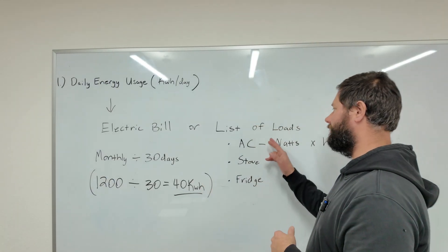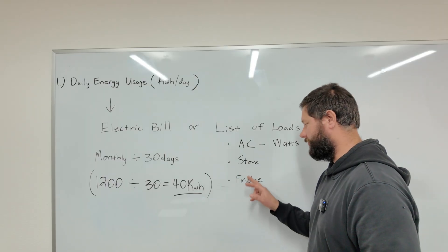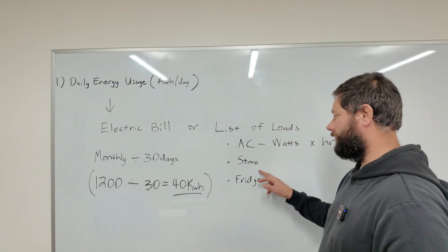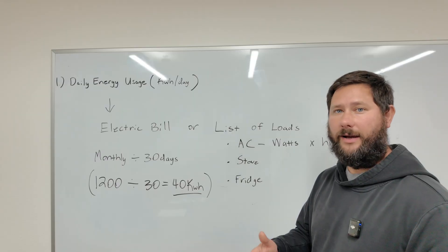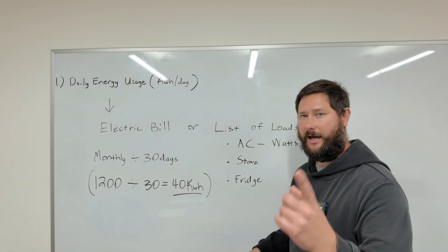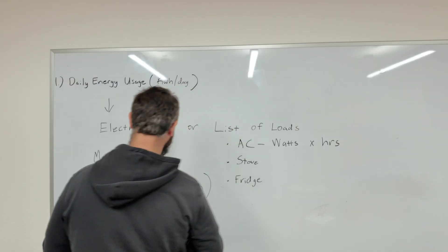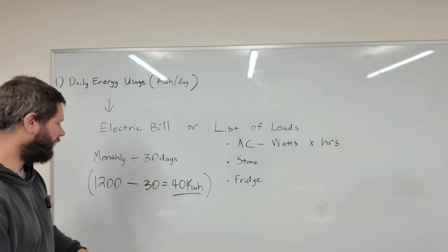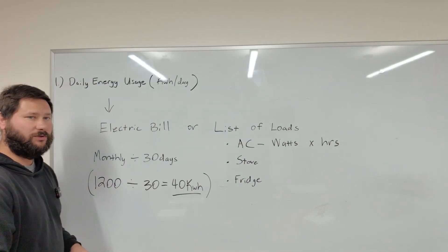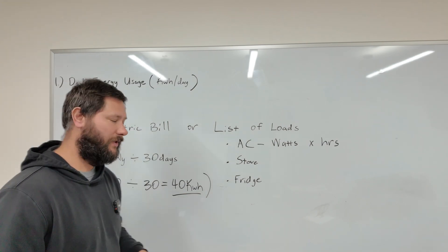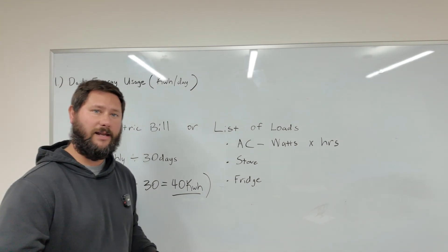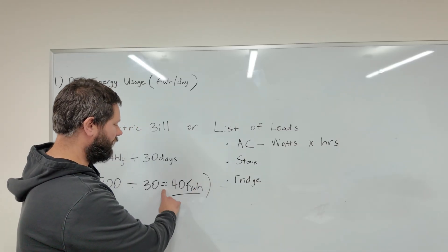Or you can list all of your loads — your air conditioner, your stove, your fridge — how many watts each one of those loads uses, times by how many hours those loads run per day. For example, we looked at our electric bill and found that our total monthly usage was 1,200 kilowatt hours. We divide 1,200 by 30 and that equals 40 kilowatt hours per day.